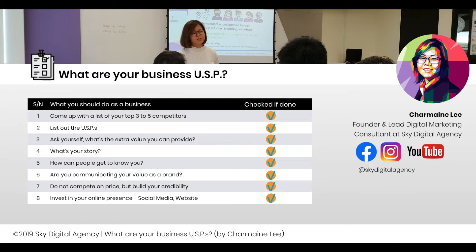As a business, come up with a simple framework: list your three to five competitors — many of our clients can't tell us who their competitors are. Then list your USPs; you should have at least three to five. Even if you're selling food like laksa, you have USPs beyond taste — there's customer service, price point, location, maybe a reward system like a loyalty card. List out your USPs as a brand.